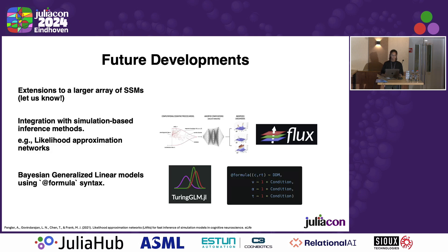Some developments that we're interested in: we're interested in continuing to expand the suite of models available — as I showed before, there's a large range of these models, so let us know if you want one included that's not there yet. Also, there are some instances where we don't have closed-form likelihoods, and so we would like to still sample from these in an efficient manner using a probabilistic programming language like Turing. One solution might be to use some of these amortized inference techniques, which could be built with Flux and then still sampled with Turing. So if you're interested or an expert in Flux, come talk to me.